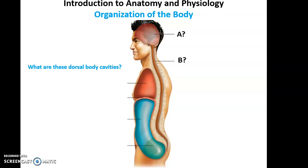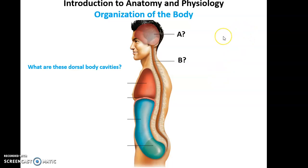Our body is organized with certain spaces found throughout the body where we have delicate organs housed. These cavities aren't like the cavities in teeth — they are just areas that are filled with delicate organs and other structures important to our function. We can break up the body into the dorsal side and the ventral side: dorsal side toward the back, ventral side toward the front.